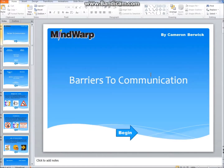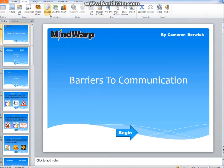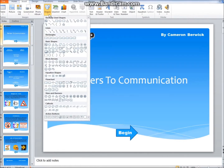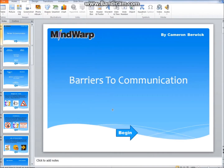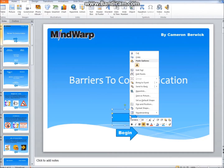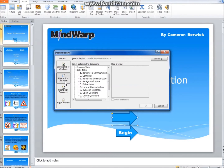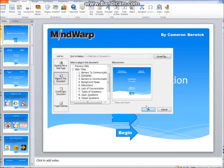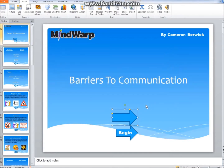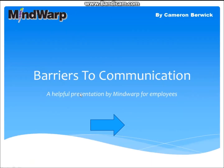To add an action button, move the mouse to the insert bar, then to shapes, then click on the shape you want for the button. Move the mouse where you want it, click and drag to create the button. To add a hyperlink, right click on the button and click hyperlink. Then click place in this document, select the slide, and click OK. Now when the button is clicked, it will trigger the hyperlink.